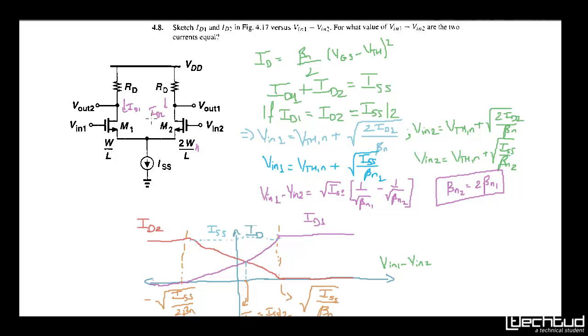So you have been asked that id1 and id2 you have to keep equal. But what is the value of vin1 minus vin2 should be so that same current passes through both m1 and m2.